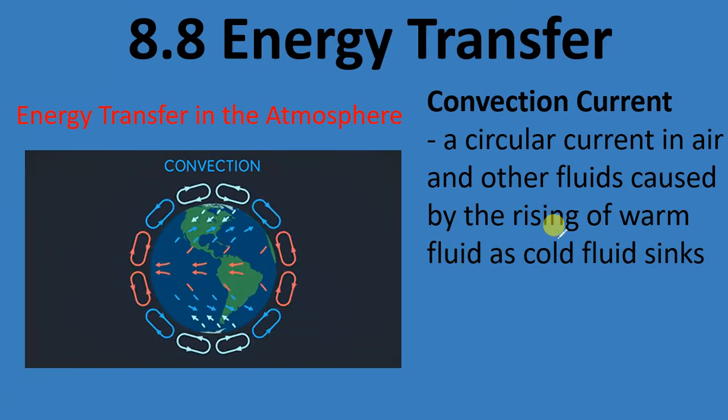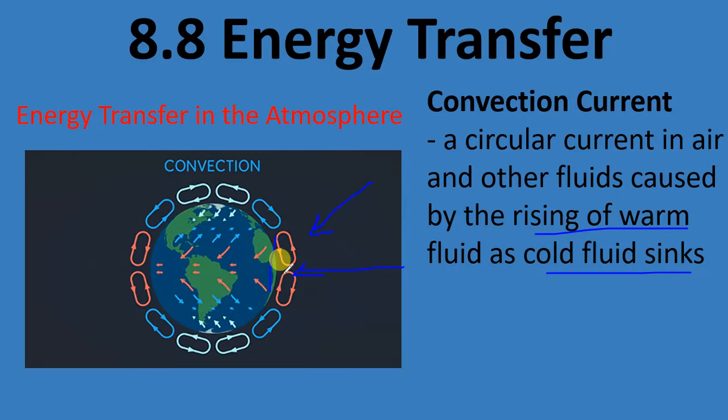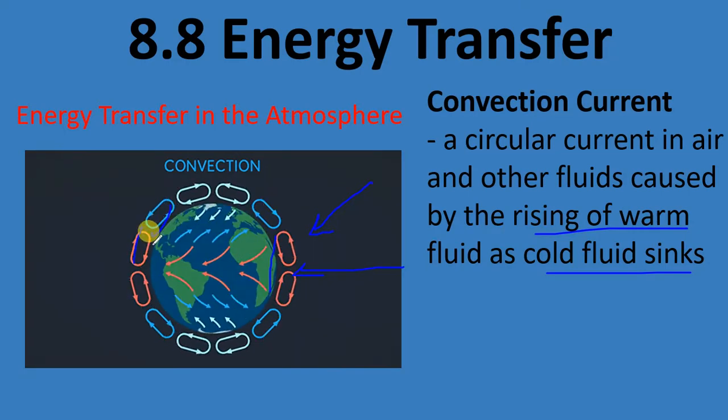Essentially, warm things rise and cool things sink. Looking at our picture here, you can see how energy, because it's coming directly at the equator, that's why our warmest parts are at the equator. You can follow these little arrows - energy starts to move up in this direction. At the same time, you get a cooling effect just above, so you're getting energy moving down.